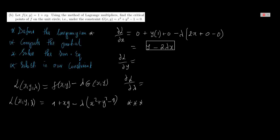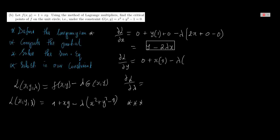The second partial derivative is with respect to y. Differentiating 1 gives zero. Keeping x constant and differentiating y gives x. For −λ(x² + y² − 1): x² differentiates to zero with respect to y, y² gives 2y, and −1 gives zero. Simplifying, the partial derivative with respect to y is x − 2λy.